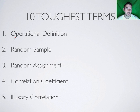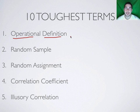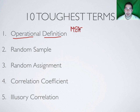Number one is an operational definition. A lot of students have trouble with this in class — being able to define things. An operational definition is very precise, very exact. It tells you exactly what you're talking about, describes the concept, but importantly it states the term or the concepts and tells you how they're going to be measured or what operations are going to be used or employed to produce them. One of the key words you want to think about here is 'measured.'